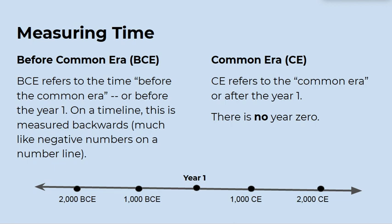Think about measuring time. We use the acronyms BCE and CE when referring to time in history. BCE refers to the time before the common era, or before the year one. On a timeline, this is measured backwards, much like negative numbers on a number line. CE refers to the common era, or after the year one. There is no year zero.